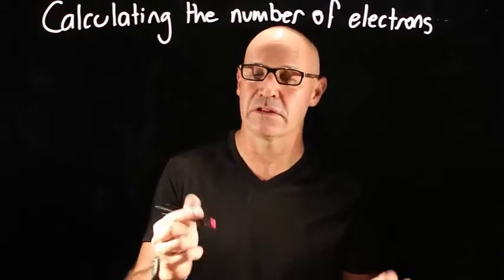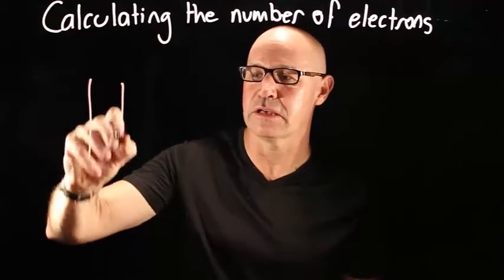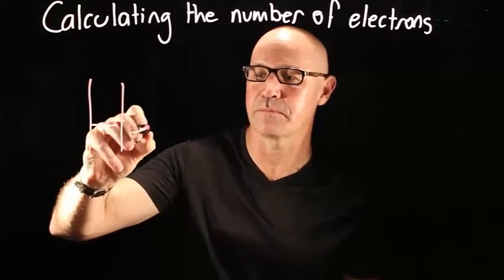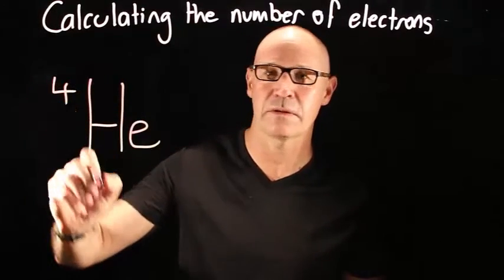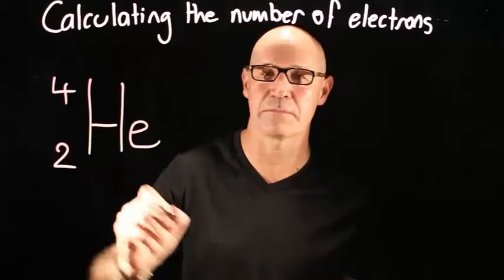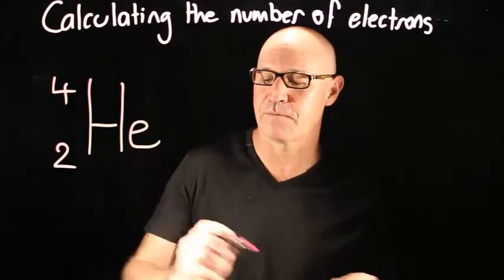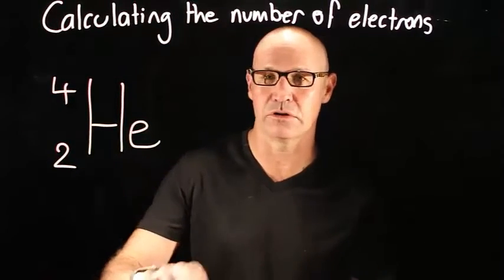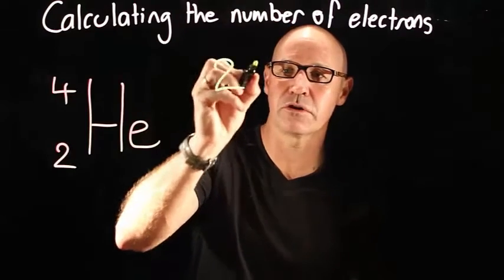So let's have a look at an example. Here's helium — mass number of four, atomic number of two. So therefore it has got two protons.